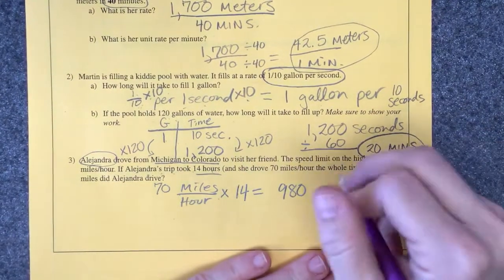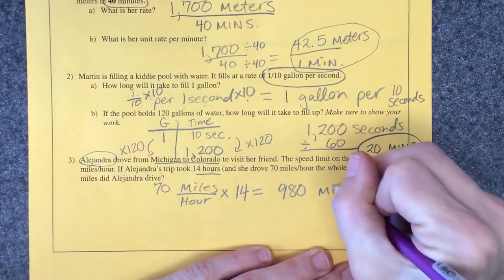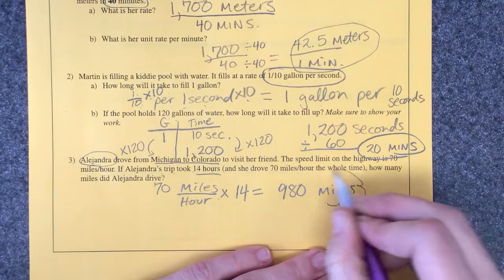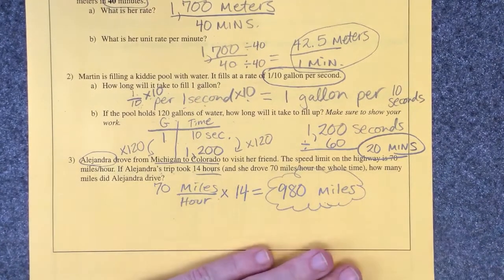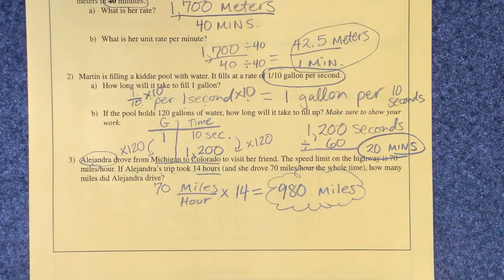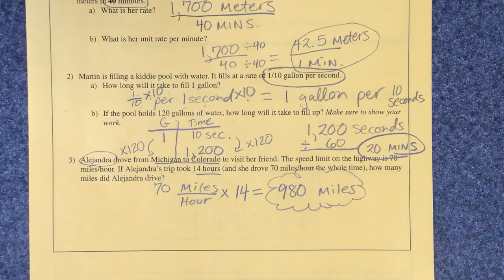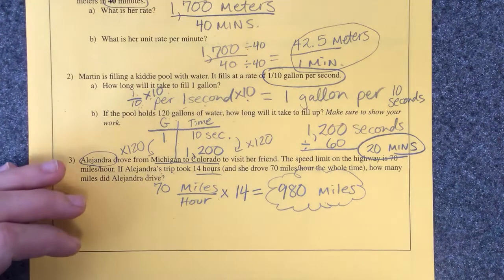980. 980 miles is how long it takes to go from Colorado to Michigan. Alejandra better pack a couple sandwiches and coffee, she's gonna be hungry. How do you know she's like an adult? Because she can drive. Okay, very good.